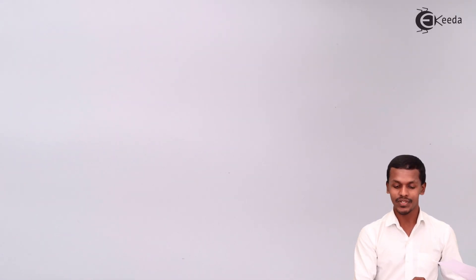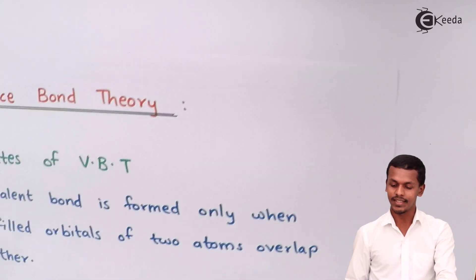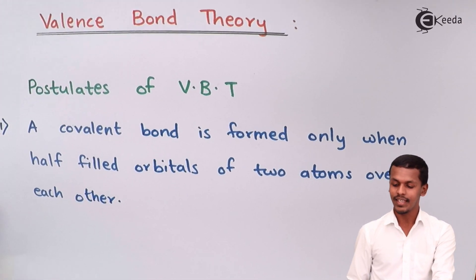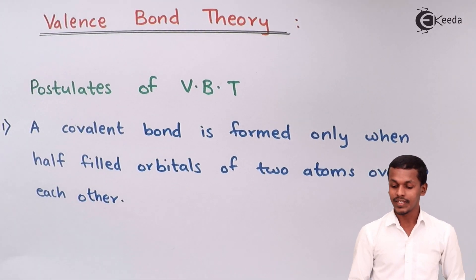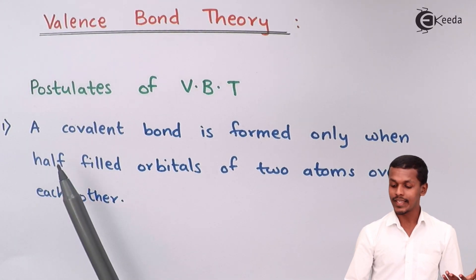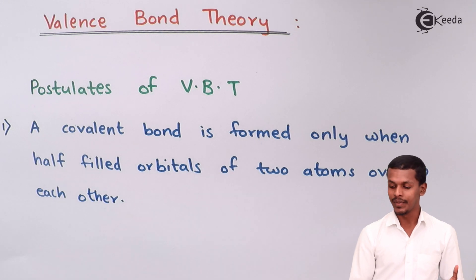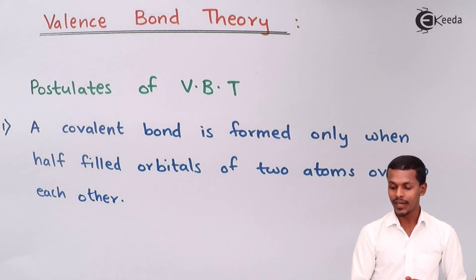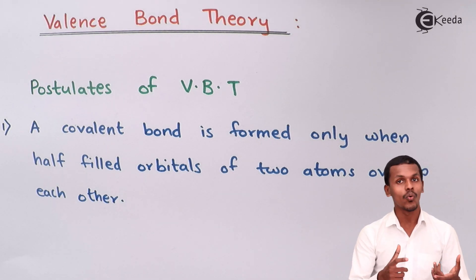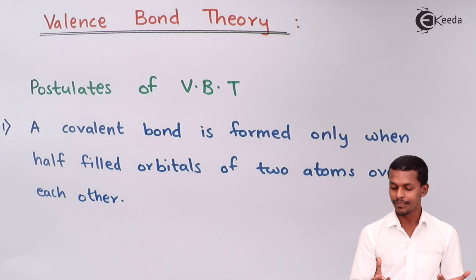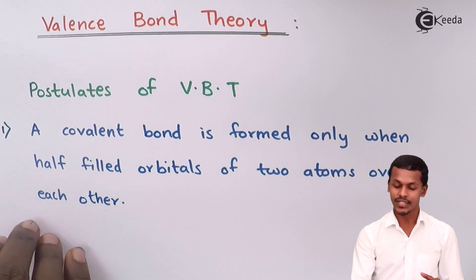So this is the first postulate: a covalent bond is formed only when the half-filled orbitals of two atoms overlap each other.